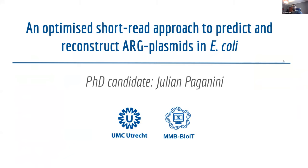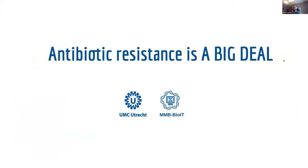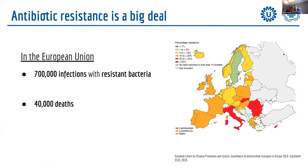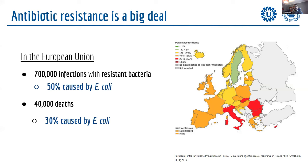Antibiotic resistance is a big deal. In the European Union alone, there are 700,000 infections caused by resistant bacteria each year, leading to approximately 4,000 deaths. What I didn't know when I started my PhD is that 50% of these infections are caused by E. coli, and 30% of the deaths are also caused by these bacteria.